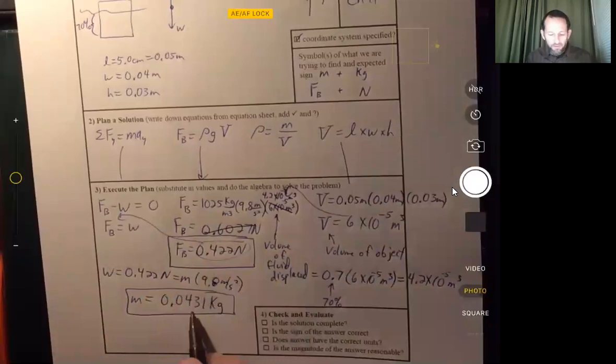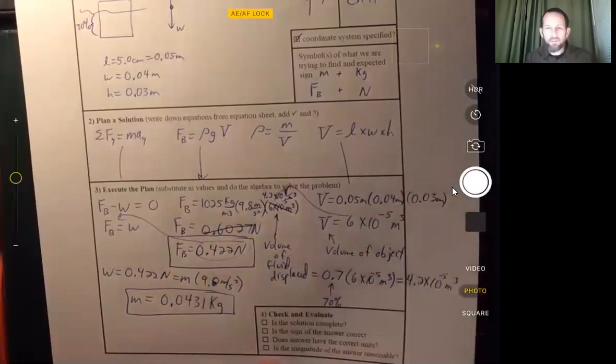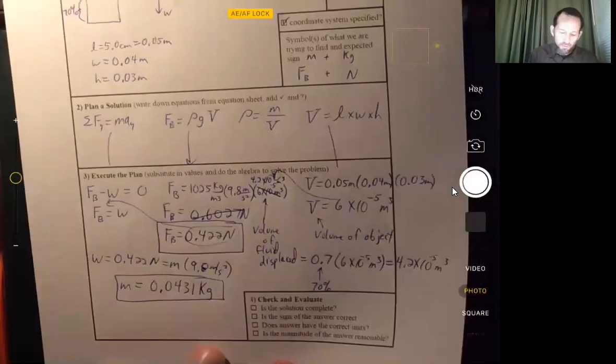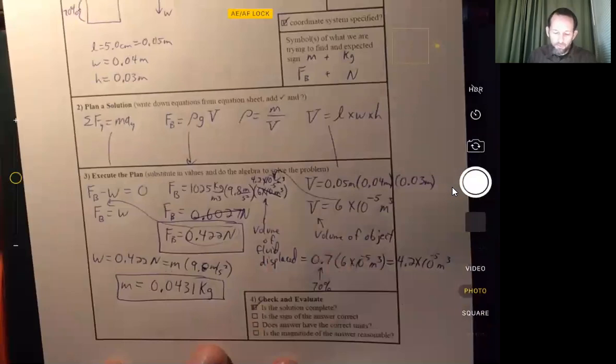Mass 43.1 grams, and it compares with the answer given at the top. We're all set. Our solution is complete. We solved for both the mass and the buoyant force.